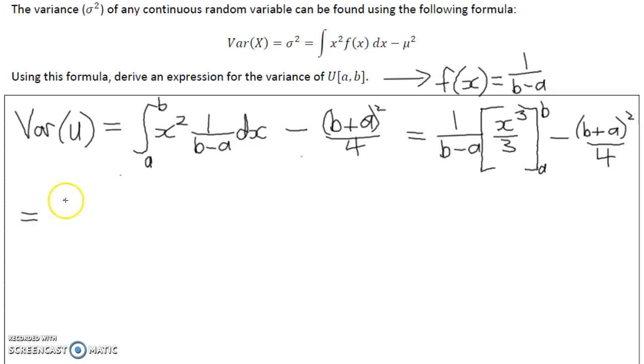Let's set the limits in, 1 over b minus a, and then we have b cubed over 3, take a cubed over 3, and of course don't forget, we need to take off the mean squared.